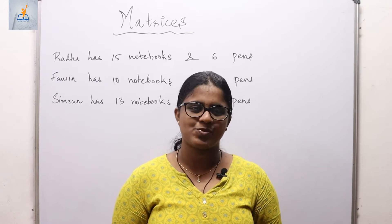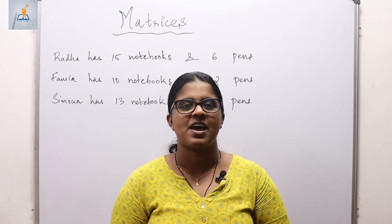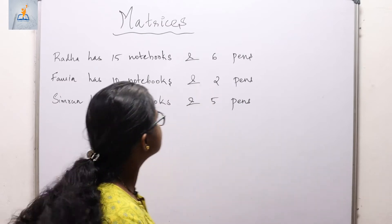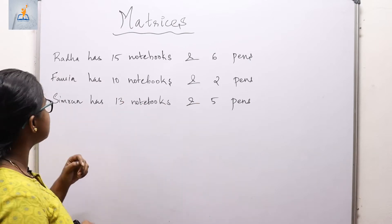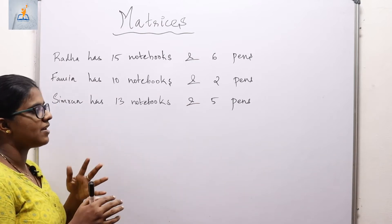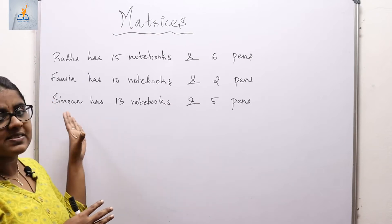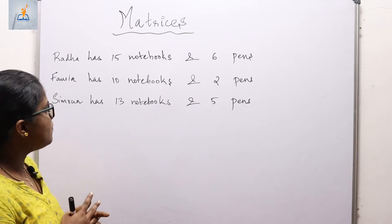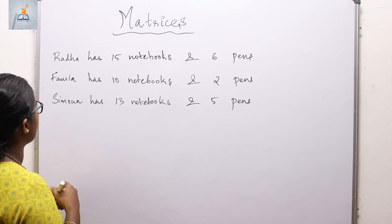Welcome back to a new video. In today's class we are going to begin a new chapter from your textbook — Matrices. Let's consider a situation: Rada has 15 notebooks and 6 pens, Fauzia has 10 notebooks and 2 pens, and Simran has 13 notebooks and 5 pens. This situation discusses three persons and the number of notebooks and pens they have. Let's put this into a tabular form.